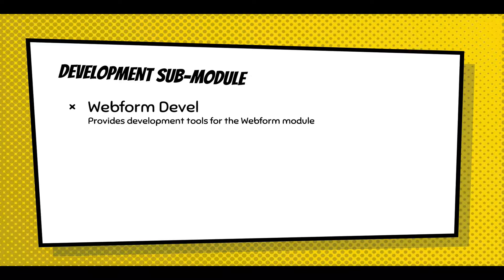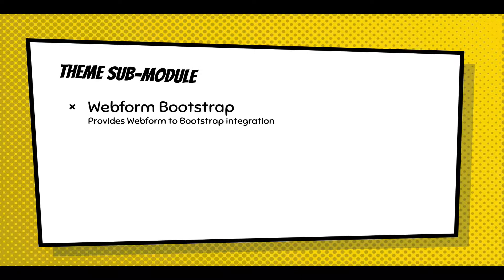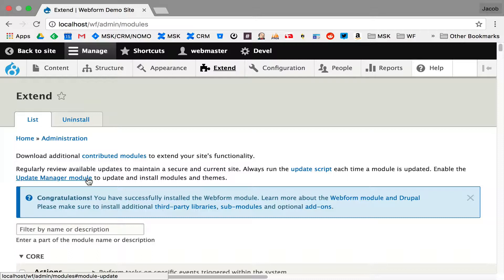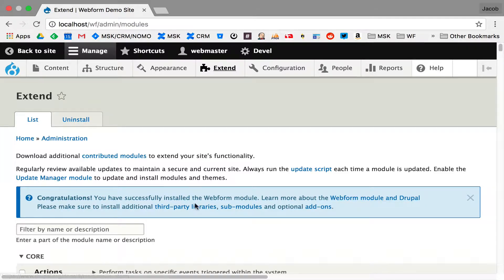There is a Webform Develop module which makes it easier to export your web forms and tidies up the YAML for all the elements. It also has details to generate data schemas of what type of data your web form is collecting. There is also that Bootstrap module — if you're using the Bootstrap theme, I recommend turning this on, as it fixes little nuances and details. When you install the module, you get a congratulations message that points you in some directions: third-party libraries, sub-modules, and add-ons.